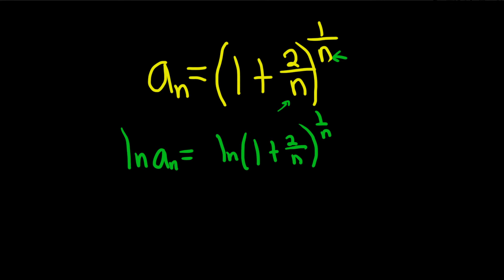If you're wondering how I knew to do this, just practice. You know, you see a lot of problems like this where you have exponents here, it's a good strategy. Now you can bring this down. So we have the natural log of a sub n equals 1 over n times the natural log of 1 plus 2 over n.